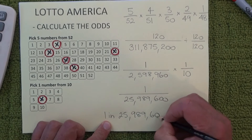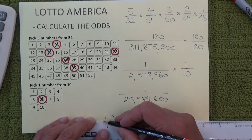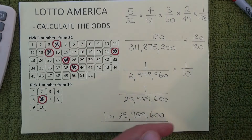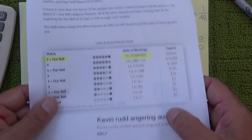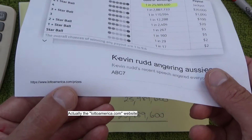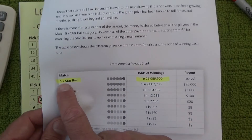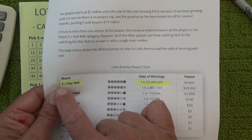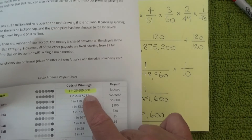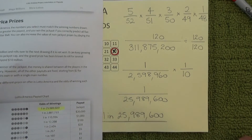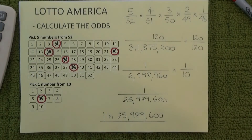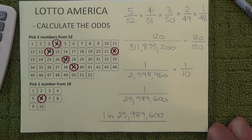And to show that my calculations are correct, I've found this printout from the lotteryamerica.com website, and it states the odds of winning five plus the star ball is one in 25,989,600 — which is exactly what I've calculated on this sheet of paper. Well, I hope you've enjoyed this video. Thank you for watching and goodbye for now.